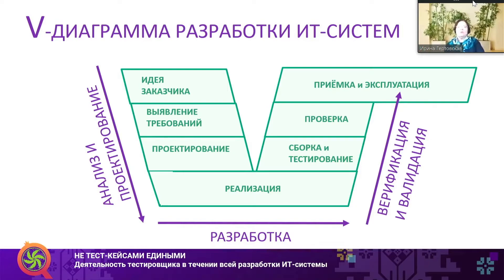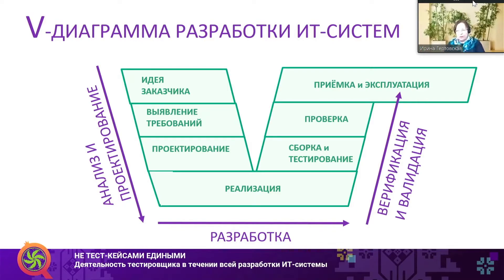How many of you know what a V-diagram is? I see one hand being raised. The V-diagram is an engineering requirements notion which demonstrates the entire route and all the points along the way that you can track. Here you can see the key points in this system: first we have customer's idea, execution of requirements, designing, implementation, building and testing, verification, acceptance and operation.